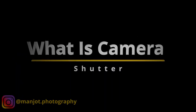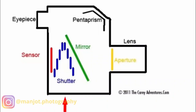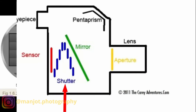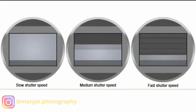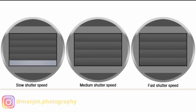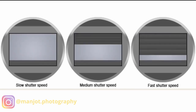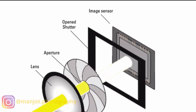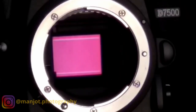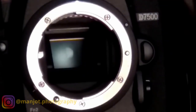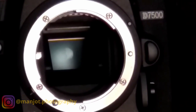Shutter speed refers to how long the camera sensor is exposed to light — the shutter opens and then closes. When the shutter opens, light comes through to the sensor; when it closes, the exposure ends. The sensor can collect light for as long as the shutter remains open.